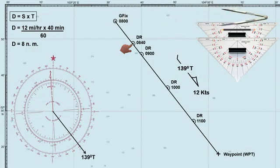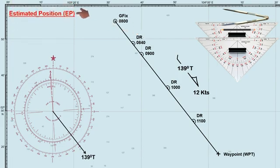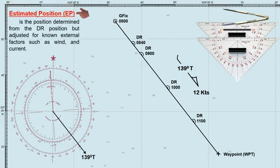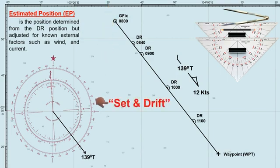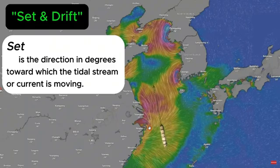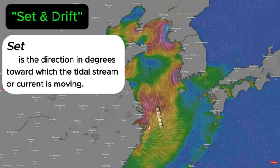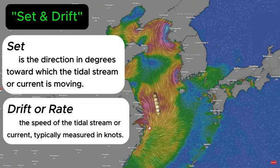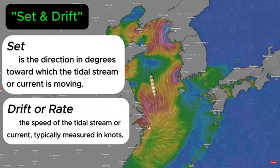Although the DR position is less accurate than other methods, it serves as the foundation for determining a more precise ship's location, such as the estimated position. Estimated position, or EP, is the position determined from the DR position, but adjusted for known external factors such as wind and current. In this scenario, we will apply the effect of a tidal stream or tidal current, known as the set and drift. Set is the direction in degrees toward which the tidal stream or current is moving, while drift or rate refers to the speed of the tidal stream or current, typically measured in knots.